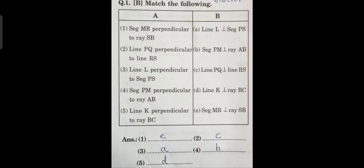Next match the following on perpendicular notation: segment MR perpendicular to ray SB — answer is option E. Line PQ perpendicular to line RS — answer is option C. Line L perpendicular to segment PS — answer is option A. Segment PM perpendicular to ray AB — answer is option B. Line K perpendicular to ray BC — answer is option D.